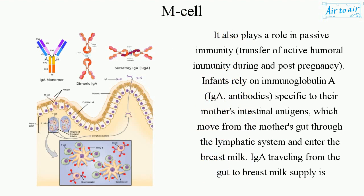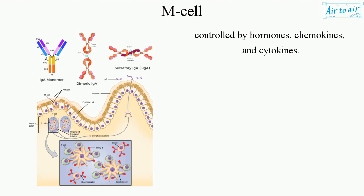M cells also play a role in passive immunity — the transfer of active humoral immunity during and post pregnancy. Infants rely on IgA antibodies specific to their mother's intestinal antigens, which move from the mother's gut through the lymphatic system and enter the breast milk. IgA traveling from the gut to breast milk is controlled by hormones, chemokines, and cytokines.